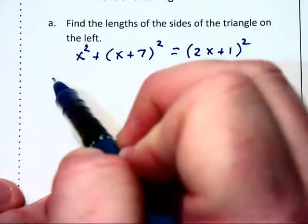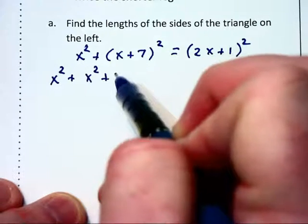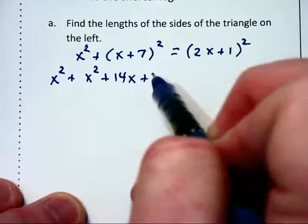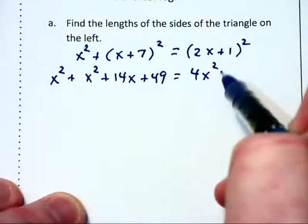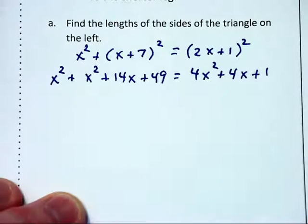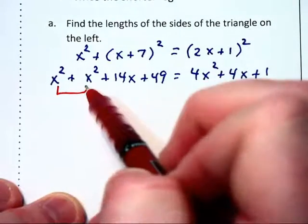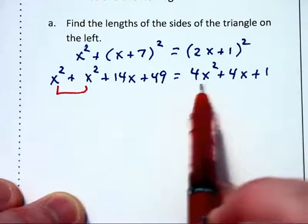We are going to have x squared plus (x plus 7) squared equals (2x plus 1) squared. Foiling these two binomials, we will have x squared plus x squared plus 14x plus 49 equals 4x squared plus 4x plus 1.